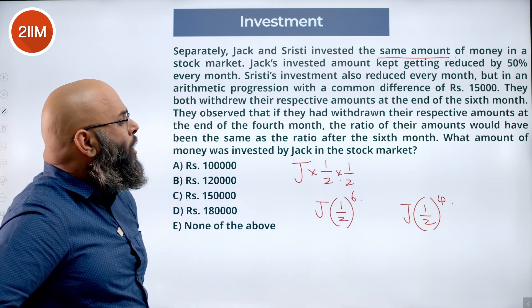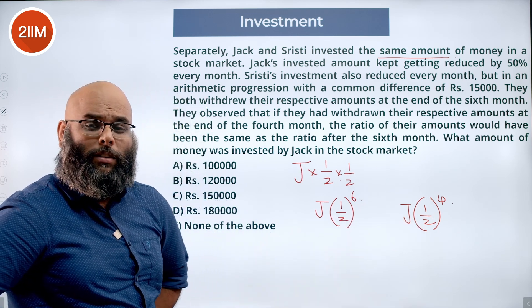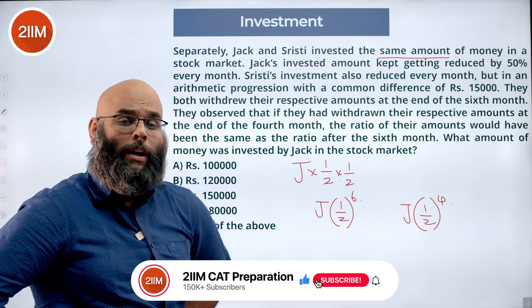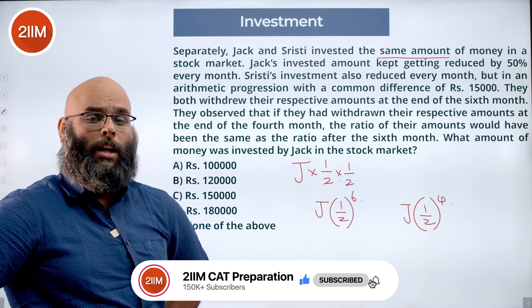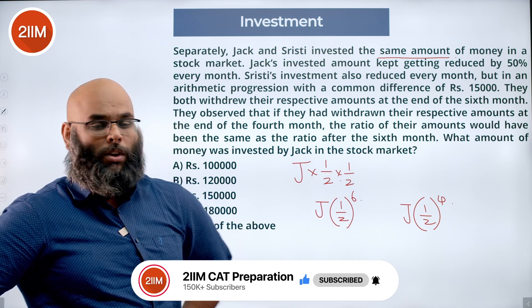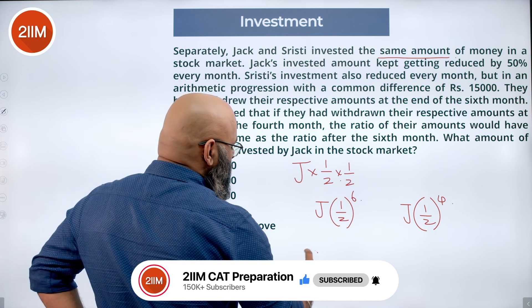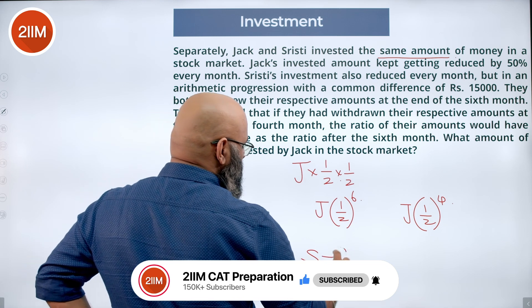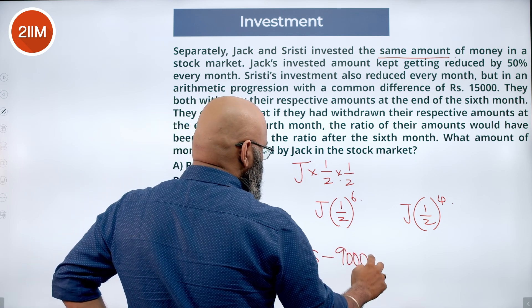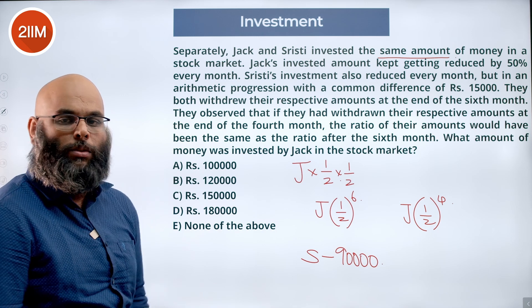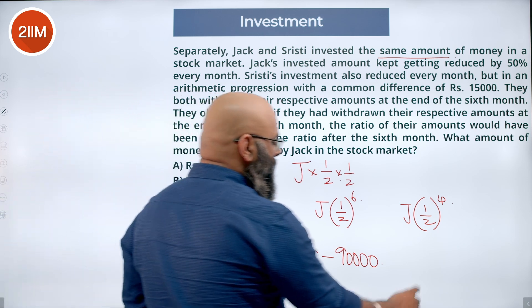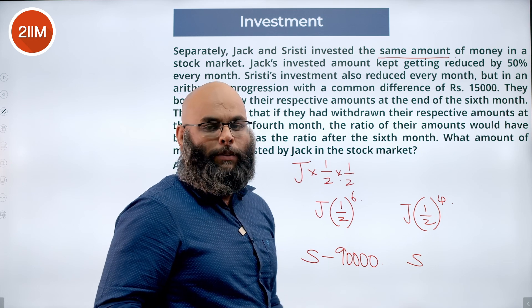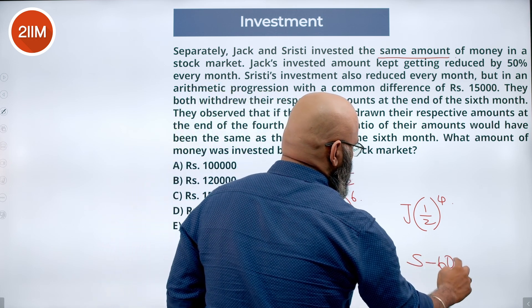Now Srishti loses 15,000 every month. For one month she loses 15,000; for two months she loses 30,000; for three months she loses 45,000, and so on. If she invested amount S and held for six months, she would have S minus 90,000 (six times 15,000). Similarly, if she had withdrawn after four months, she would have lost four times 15,000, giving S minus 60,000.